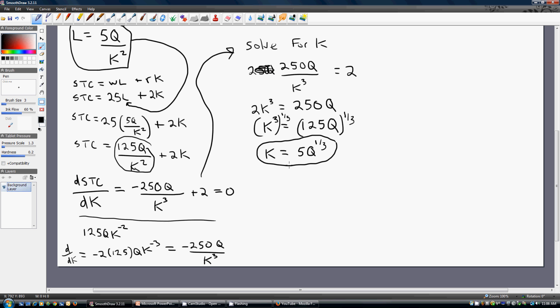Next, we're going to go back to our short-run total cost function. And wherever we see a K, we're going to plug in 5 times Q to the one-third power. Doing this will be now our long-run total cost function. So our long-run total cost function is going to look like this. So wherever I saw a K term in our short-run total cost function, I'm plugging in 5 times Q to the one-third power. I'm going to simplify this a little bit.